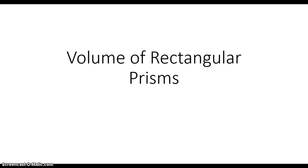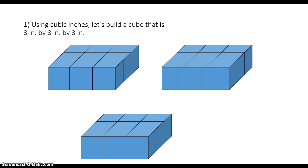Now let's talk about the volume of rectangular prisms. If you can find the volume of a rectangular prism and the area of other polygons, you should be able to find the volume of any three-dimensional prism. Using cubic inches, let's build a cube that is three inches by three inches by three inches. I just have three layers of three-by-three cubes.